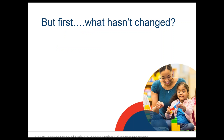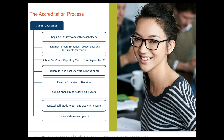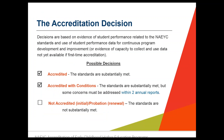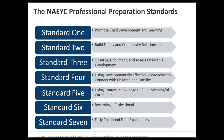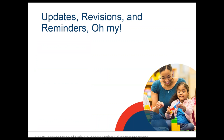Before we get into updates, we also wanted to highlight what hasn't changed. The accreditation process itself has not changed. Programs are still submitting self-study reports, there is still a site visit, the accreditation period lasts seven years, and renewal starts in year six. The accreditation decisions remain the same, and the NAEYC professional preparation standards — both initial and advanced — have remained the same. We'll talk a bit later about standard seven, but the standard itself has stayed the same.